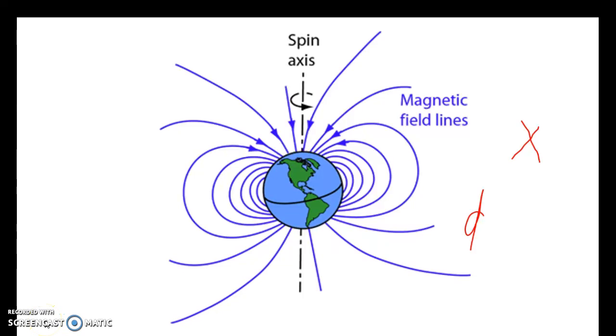The Earth's magnetic field is similar to that of a bar magnet tilted 11 degrees from the spin axis of the Earth, just like so.